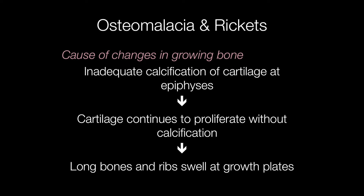In growing bone, inadequate calcification of cartilage at the epiphyses results in cartilage continuing to proliferate without calcification, causing the long bones and ribs to swell at the growth plates — producing the typical appearance of the affected bones. The epiphyses, by the way, are the parts of bone where growth occurs, resulting in elongation of the bones.